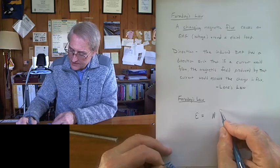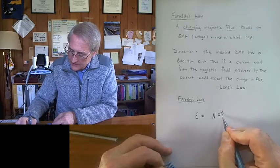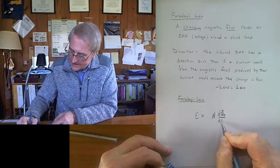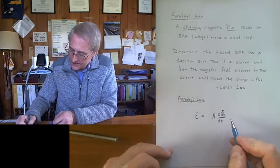And then the time rate of change of magnetic flux, so d/dt of phi_B is magnetic flux.